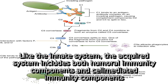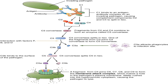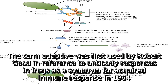Like the innate system, the acquired system includes both humoral immunity components and cell-mediated immunity components. The term adaptive was first used by Robert Goode in reference to antibody responses in frogs as a synonym for acquired immune response in 1964.